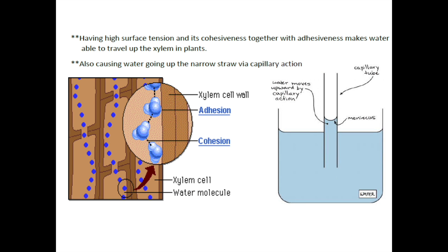Having high surface tension and cohesiveness together with adhesiveness makes water able to travel up xylem in plants. Some trees can be so tall that it makes us wonder how water can travel from the ground to the top of the tree against gravity. Water molecules are able to form hydrogen bonding with the xylem wall — this is called adhesion. Due to adhesiveness, one water molecule climbs up the xylem wall. Because that molecule is connected to the next via hydrogen bonding — known as cohesion — when one water molecule climbs up, it pulls the next molecule up with it, enabling a continuous column of water to go up the xylem.